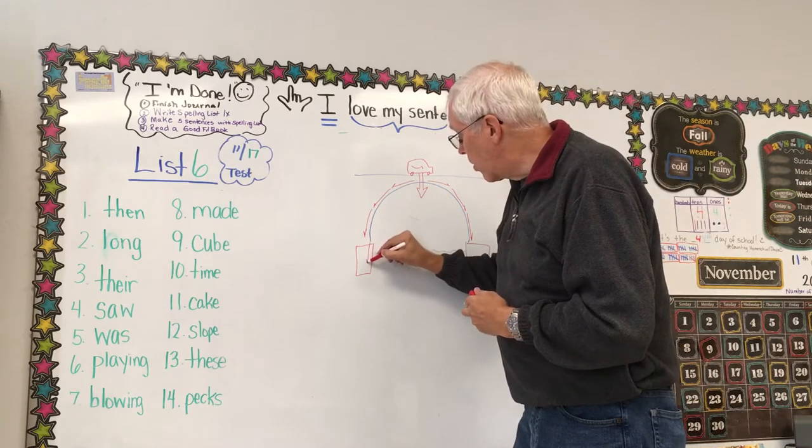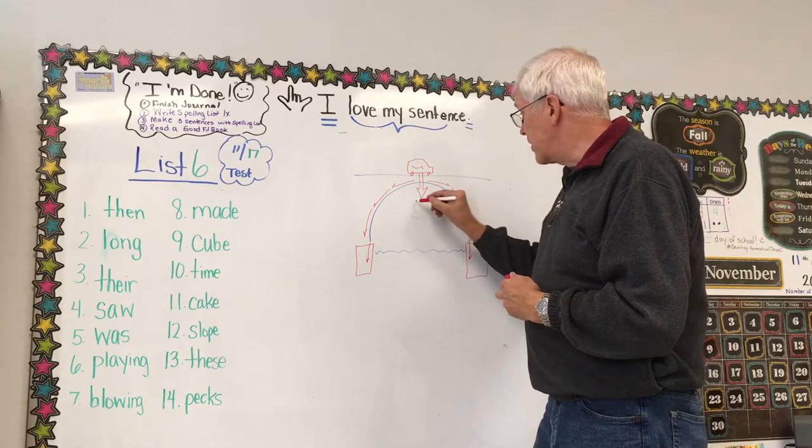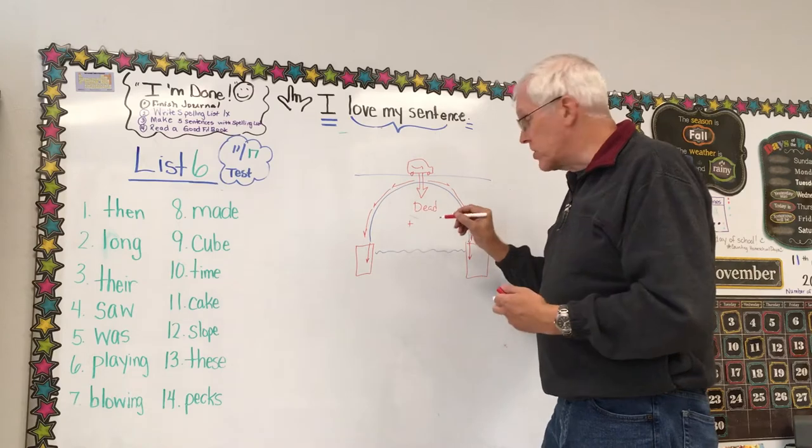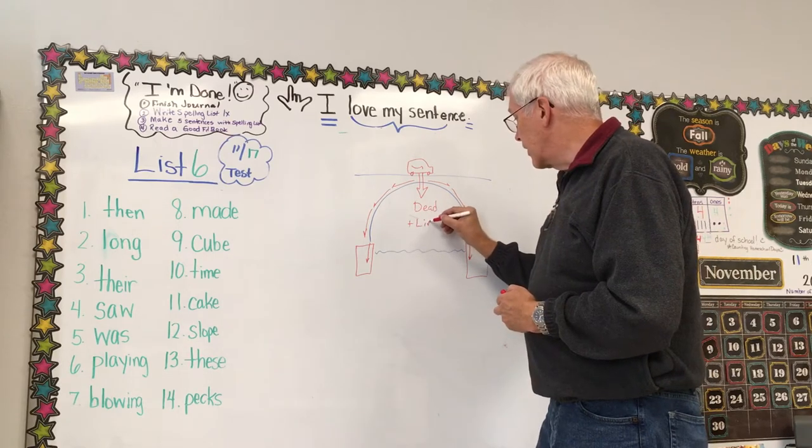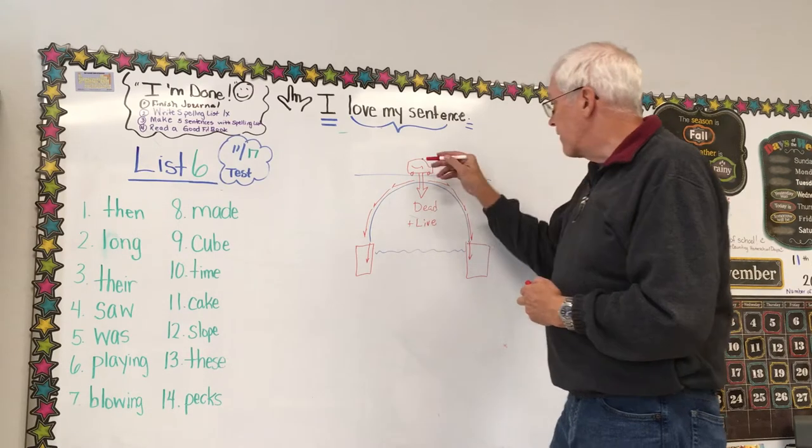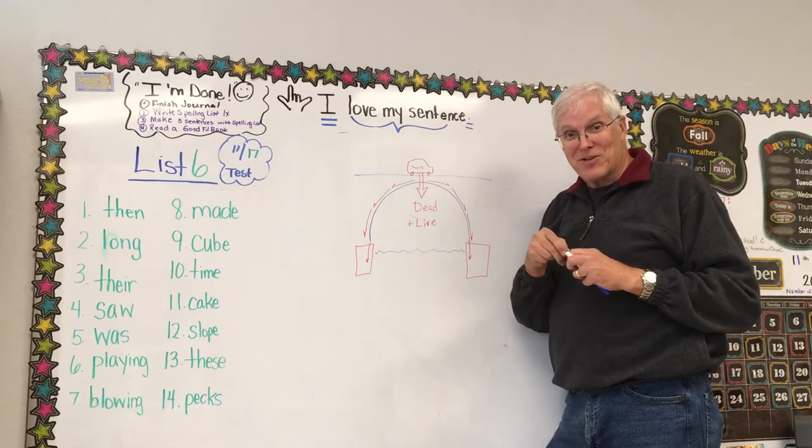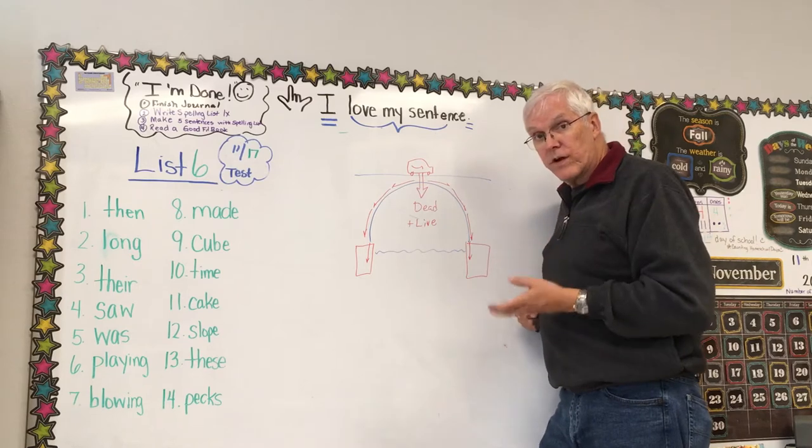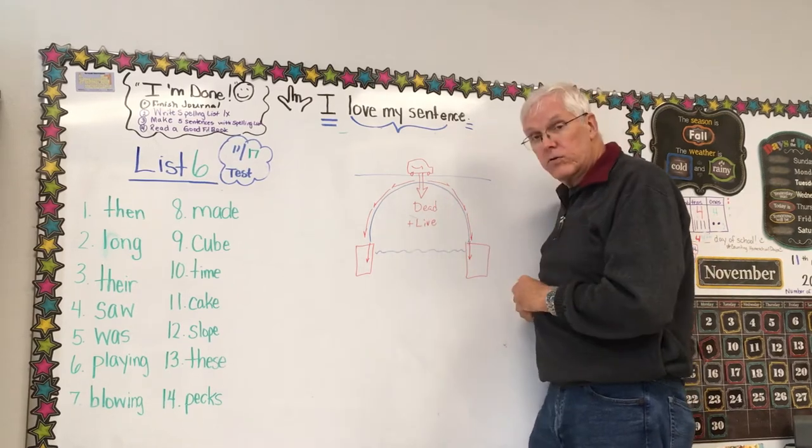So all the weight of the bridge, both the dead load, which is the weight of the bridge itself, and the live load, which is the weight of anything that goes on the bridge. And that's not always just Amazon trucks. Think about in the winter, it could be snow. Snow is very heavy and that would be a live load to the bridge.